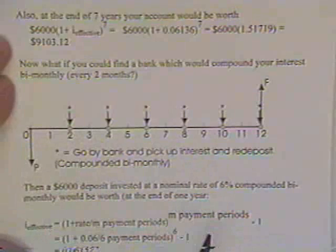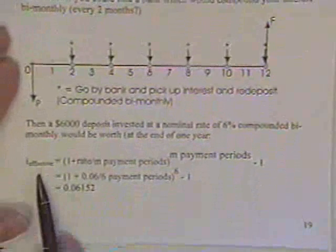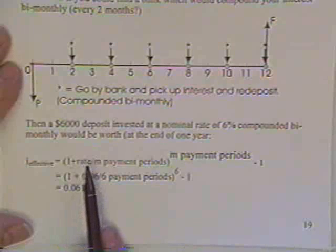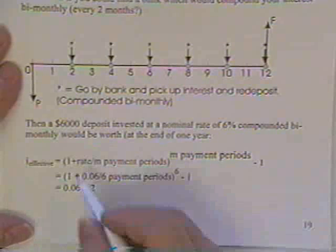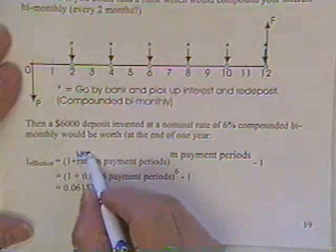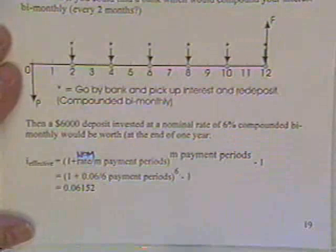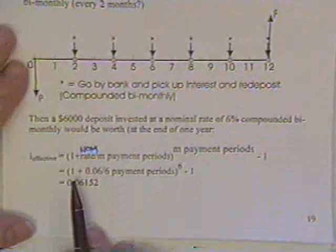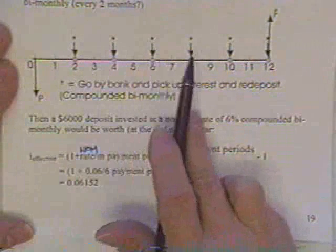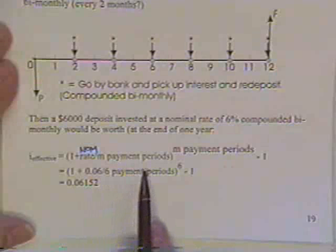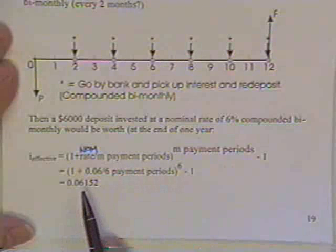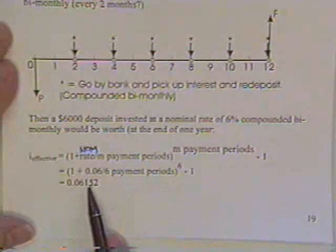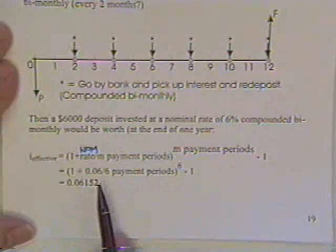Then you would find the effective rate by saying it's one plus the nominal rate divided by m, raised to the m payment period minus one. In this case there's one, two, three, four, five, six payment periods and we raise that to the sixth power. Instead of giving me 6.136, he's giving me a little more, 6.152.